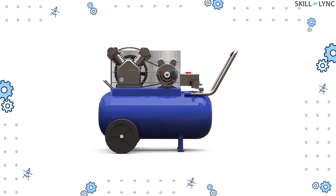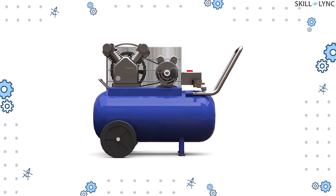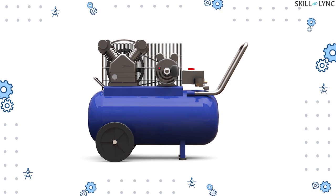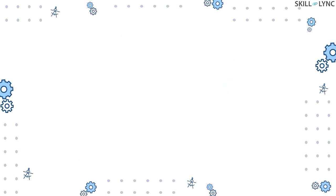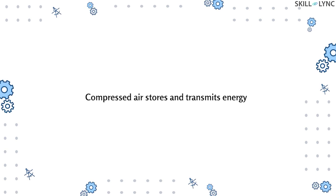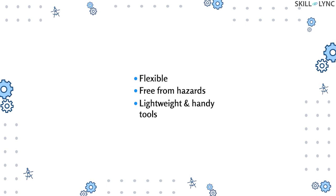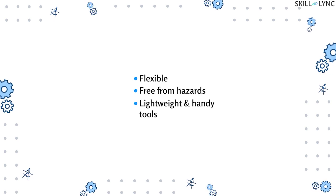An air compressor is an energy-consuming device used to compress air. It is operated by a prime mover like a motor, and it stores the compressed air in a tank. Compressed air serves as a better medium for storing and transmitting energy. It is preferred over other systems because it is flexible, free from electric hazards, and the tools can be made lightweight and handy.